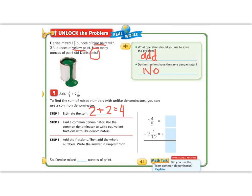4/5 and 1/10. So we need a common denominator with 5 and 10. Remember we can list out multiples to find the lowest common denominator. 5, 10, 15, 20.